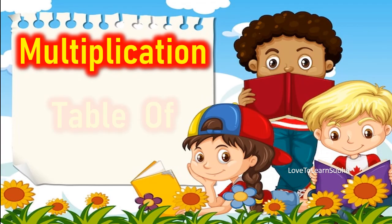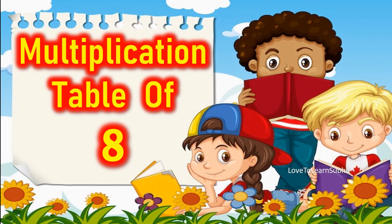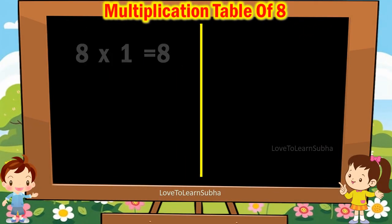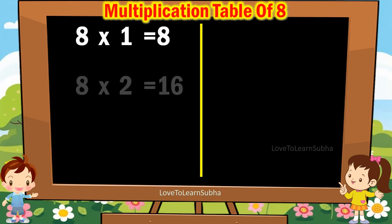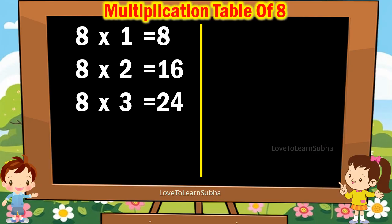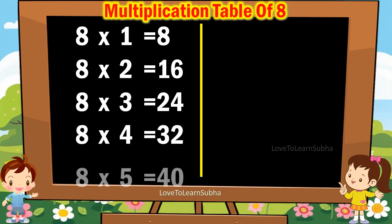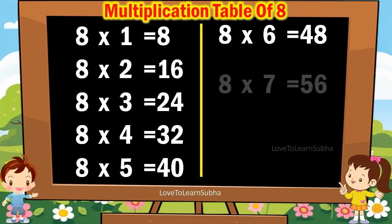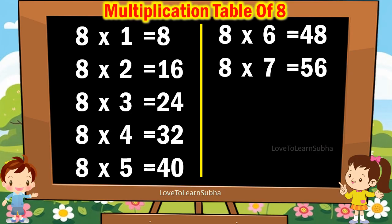Multiplication table of 8. 8 1s are 8. 8 2s are 16. 8 3s are 24. 8 4s are 32. 8 5s are 40. 8 6s are 48. 8 7s are 56.